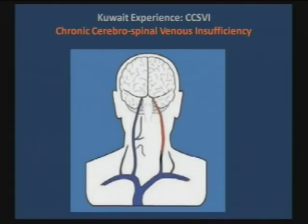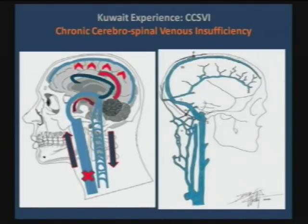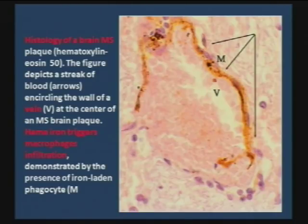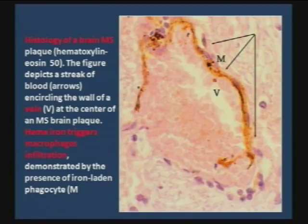We know about CCSVI — people before me have talked about its definition and the problem. The picture on the left shows stenosis of the internal jugular, reverse flow, and reflux into the brain. A similar histology slide was shown before, showing MS plaques around the vein with iron hemosiderin developing around the vein, which may be a cause for starting the autoimmune cascade that causes MS, or at least it might worsen the condition of an MS patient.